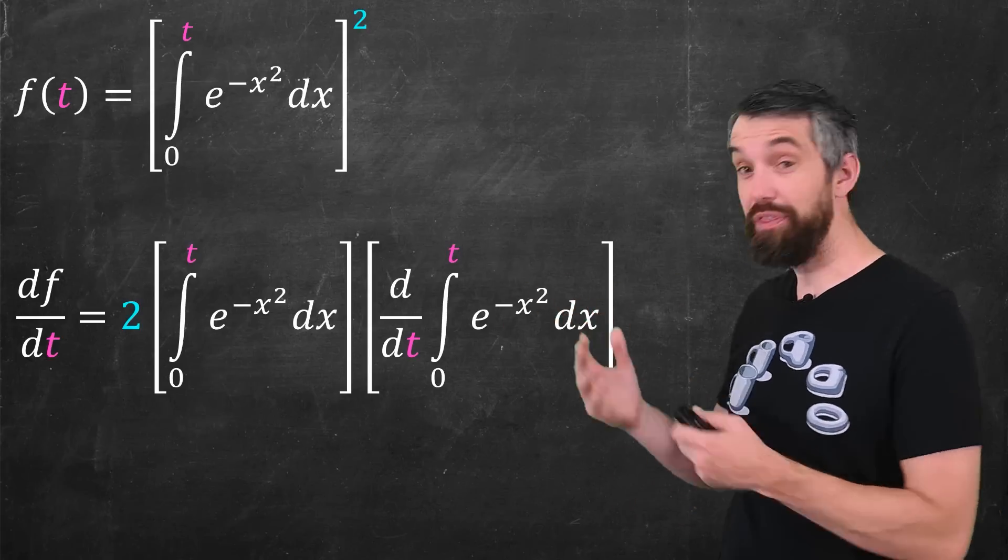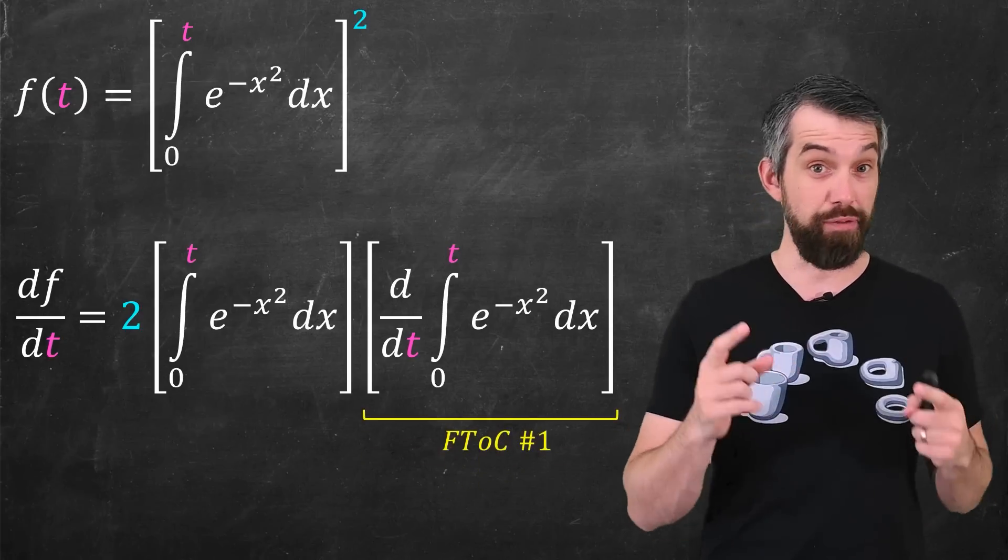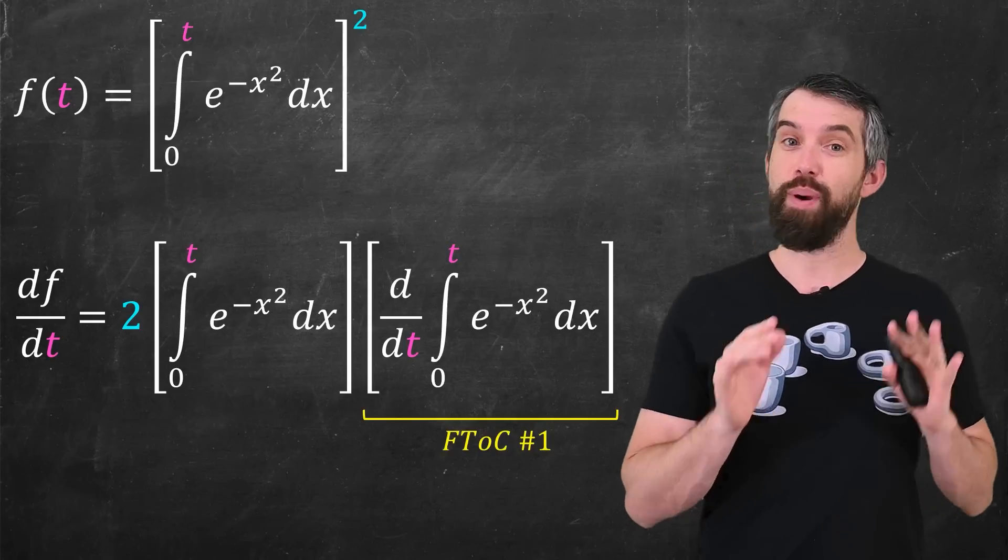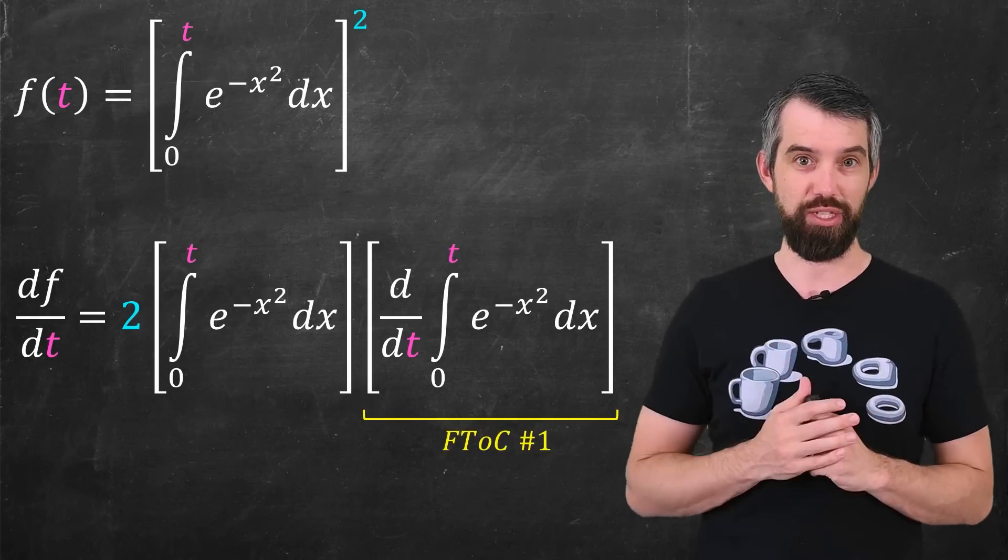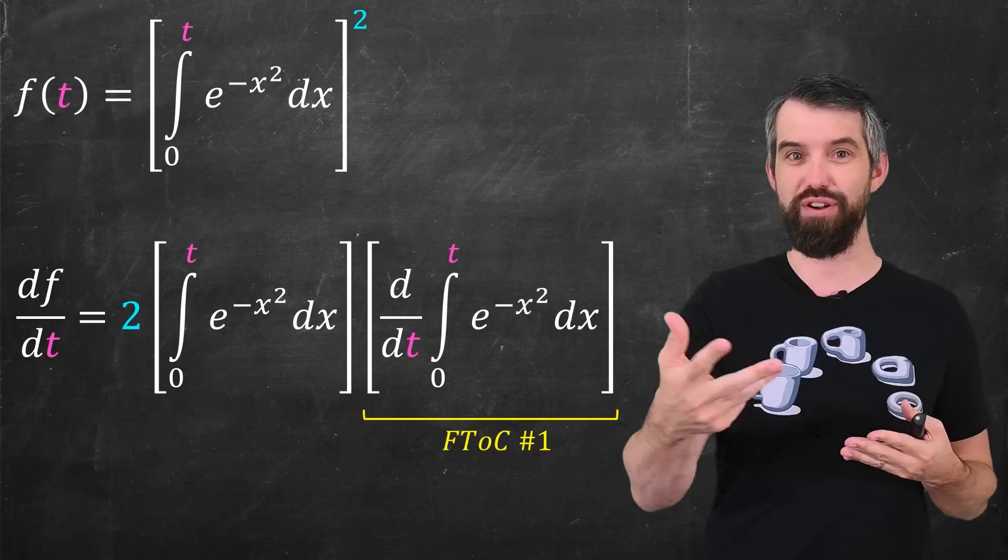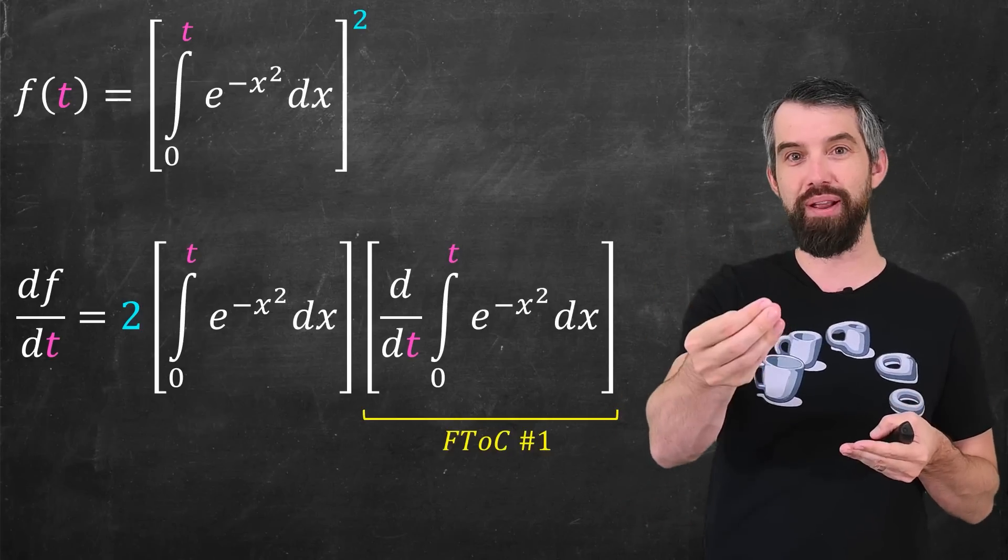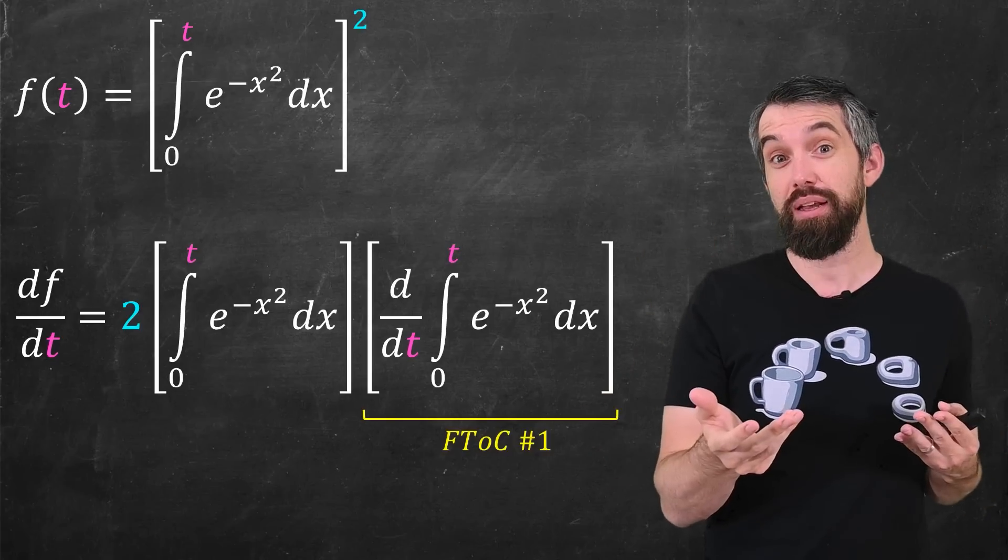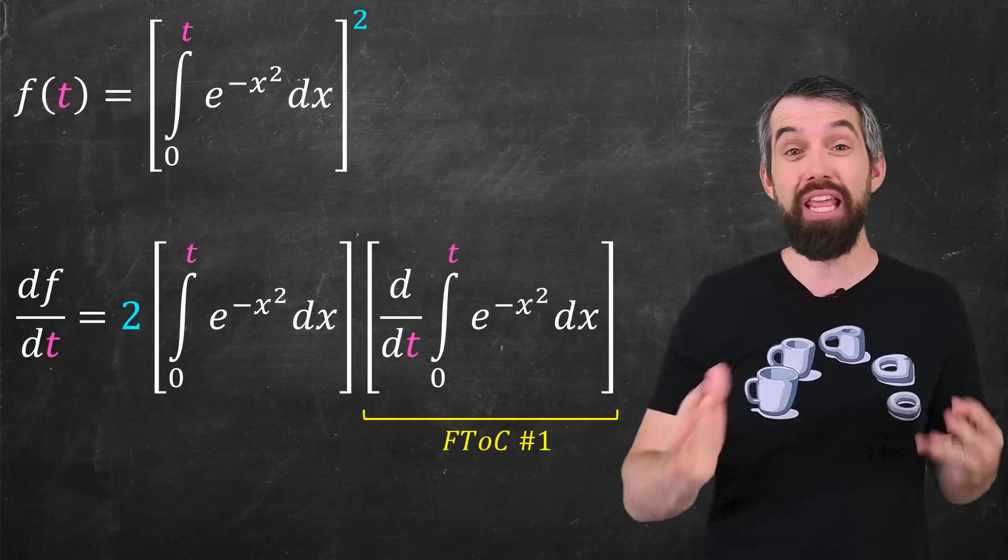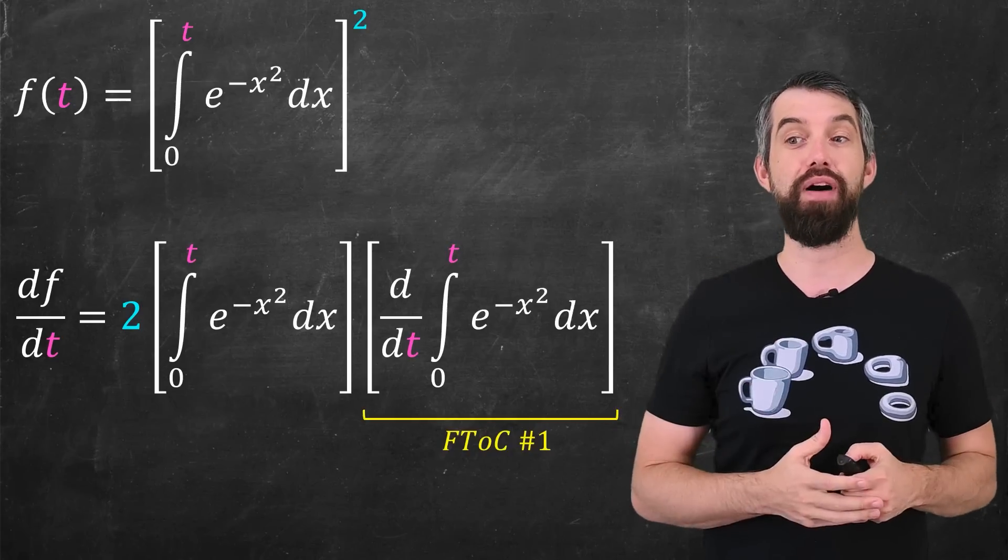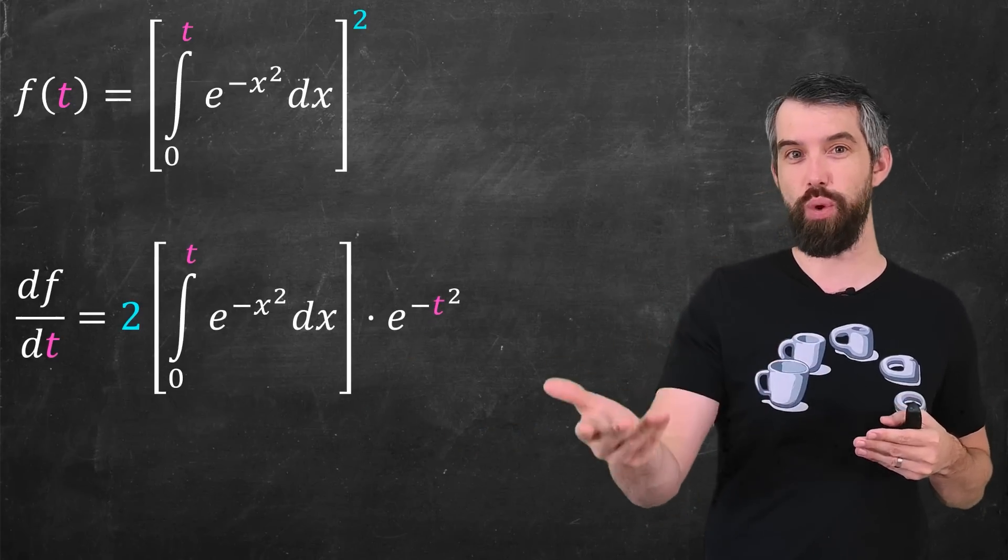So now if I look at that inside portion, the derivative with respect to t of this integral, I can solve this very easily by the fundamental theorem of calculus, which says when you take the derivative of an accumulation function like this, zero up to a variable, the derivative and the integral in a sense cancel. But what it really means is you just take the integrand and anywhere there's an x you replace it with a t. So this is going to simplify to be e to the minus t squared.